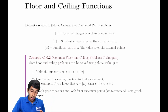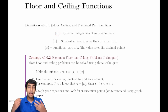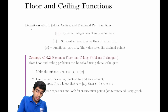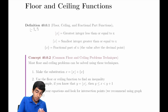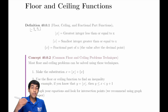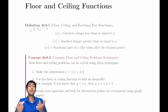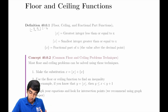The floor of a number is simply the greatest integer that's less than or equal to it. Be very careful here. For example, the floor of negative 3.5 is not negative 3, but negative 4, because negative 4 is less than negative 3.5. It's the greatest integer less than or equal to the number.